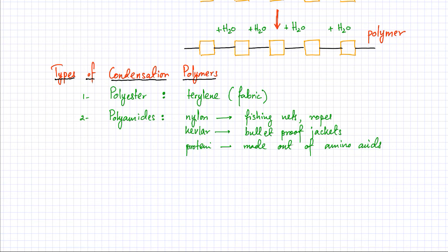The third example of condensation polymerization is the complex carbohydrates or sugars. Starch is one example of a complex carbohydrate, and it's made out of glucose monomers.